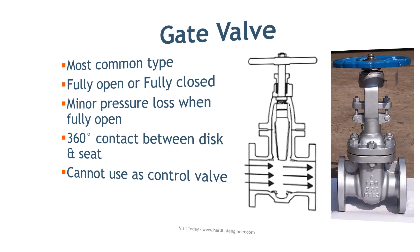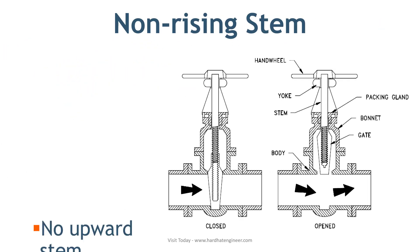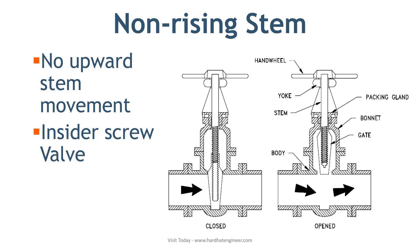Gate valves have either a rising or non-rising stem. A rising stem provides a visual indication of valve position because the stem is attached to the gate in such a way that the gate and stem rise and lower together as the valve is operated. A non-rising stem valve has a pointer threaded onto the upper end of the stem to indicate the valve position, since the stem does not rise or lower when you operate the valve. Non-rising stems are used underground or where vertical space is limited.